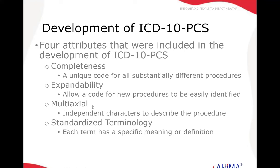There were four attributes — four themes that 3M and the other interested parties wanted as the outcome of this new hospital procedure coding system. Number one, it had to be complete, meaning it had to have a unique code for all different procedures. It needed to be expandable — in just the last 10 years or so, we have a number of different procedures that didn't exist before, things like TAVRs. By having an expandable coding system, it allowed for a unique code for each of these new procedures. It's multi-axial, so all characters are independent, allowing us to fully describe what the procedure is at a fine level of detail. And finally, each term needs to have a specific meaning or definition using standardized terminology.